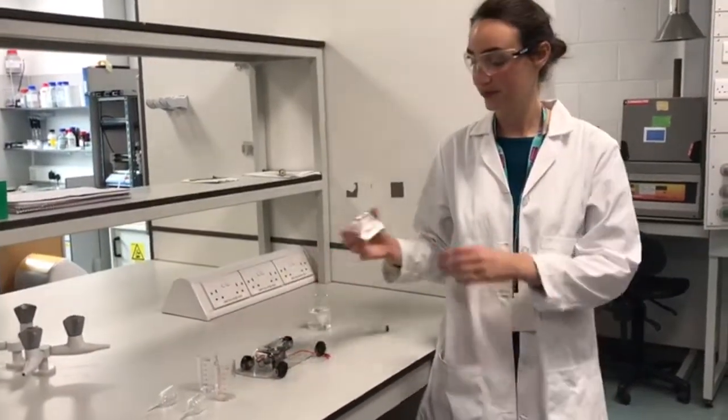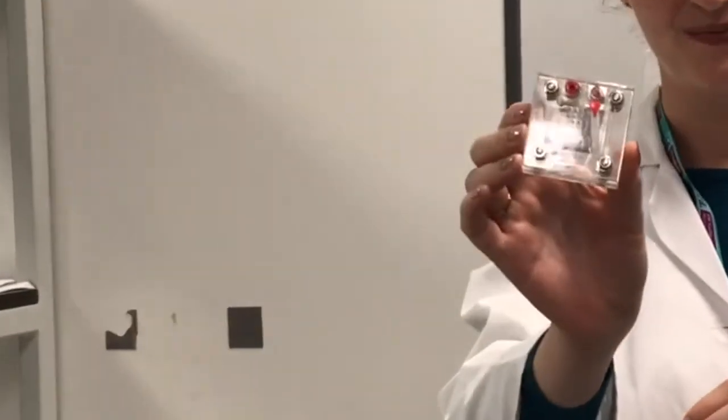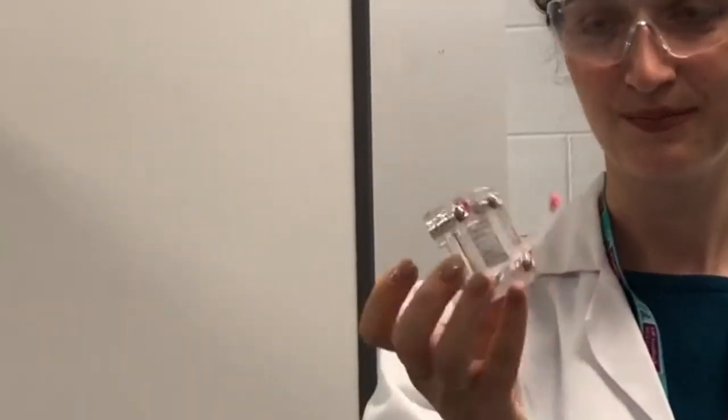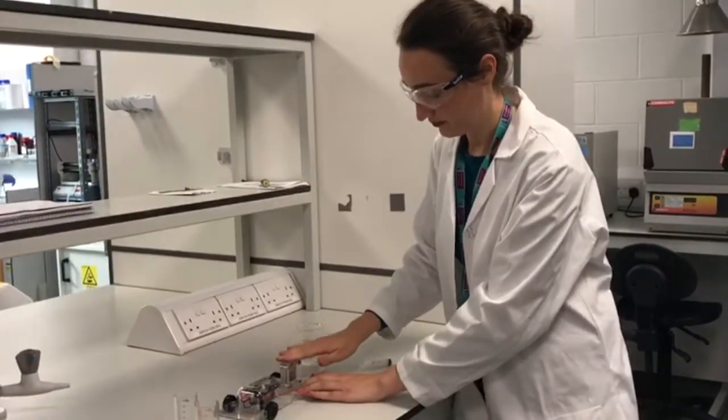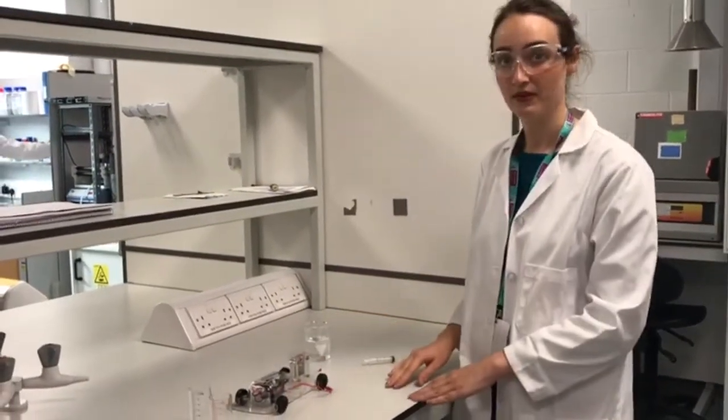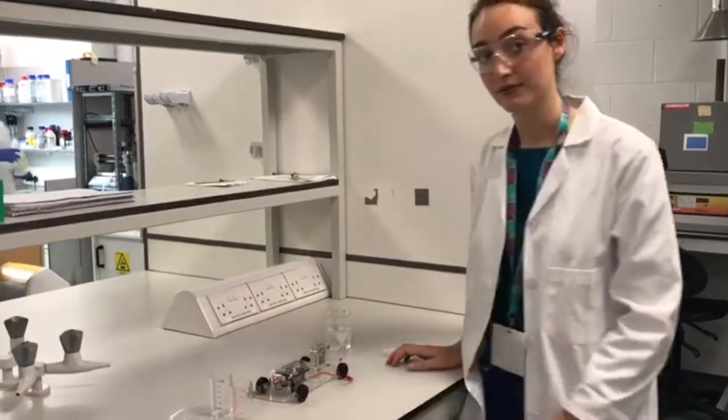So this is a fuel cell. As you can see there are two sides, the anode and the cathode separated by a thin membrane. We're going to use this to split water into hydrogen and oxygen by passing an electric current through the water. This is called electrolysis.